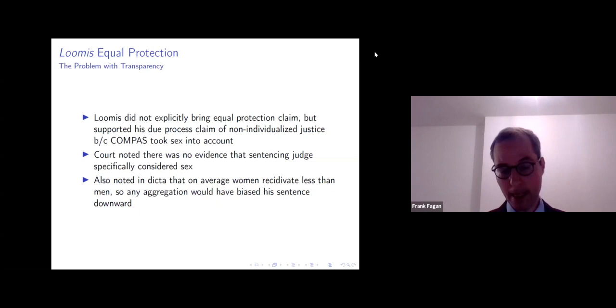I'll just mention something briefly about equal protection. He didn't, Loomis that is, didn't specifically bring an equal protection claim. But he did try to support his individualized justice claim by asserting that Compass and the sentencing judge had taken sex into account. And so this supported his argument that he was being judged or he was being sentenced on aggregate data as opposed to something that's individual.